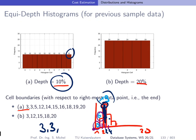Continuing to accumulate from values 4 and 5, you find that 5 becomes the boundary for the next batch of 12, then 12 and so on. The same process works for creating batches of 24 elements in the depth-20% case.